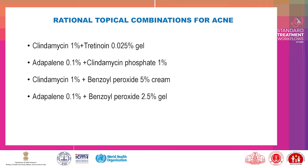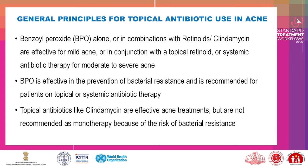Rational topical combinations for acne include: clindamycin 1% plus tretinoin 0.025% gel; adapalene 0.1% plus clindamycin phosphate 1%; clindamycin 1% plus benzoyl peroxide 5% cream; and adapalene 0.1% plus benzoyl peroxide 2.5% gel. Benzoyl peroxide alone or in combination with retinoids or clindamycin is effective for mild acne, or in conjunction with topical retinoid or systemic antibiotic therapy for moderate to severe acne. BPO is effective in prevention of bacterial resistance and is recommended for patients on topical or systemic antibiotic therapy. Topical antibiotics like clindamycin are effective acne treatments but are not recommended as monotherapy due to the risk of bacterial resistance.